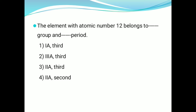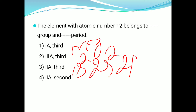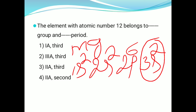Atomic number 12 is the magnesium element. Its electronic configuration is 1s², 2s², 2p⁶, 3s². The outermost orbit has 2 electrons, so it is in the second-A group. The outermost orbit has principal quantum number 3, so it is in the third period.